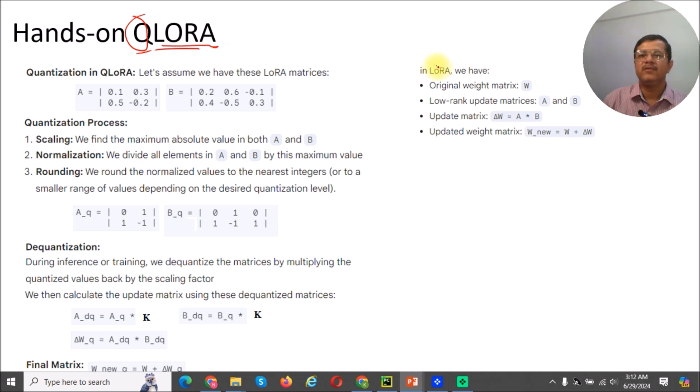So if you go through the previous tutorials, then you will understand that in low-rank adaptation techniques, we have a original weight matrix W in our pre-trained model. Then we select the low-rank update matrices A and B, and then we calculate the update matrix by multiplying it and then update the matrix by adding it with the original matrix.